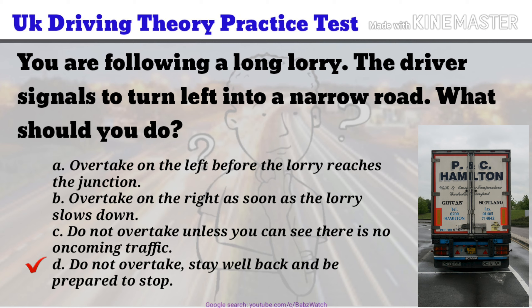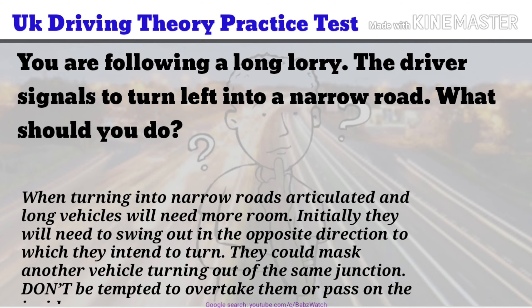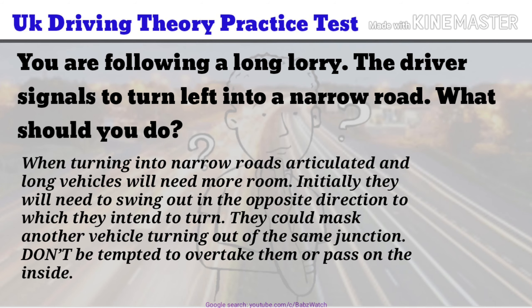Do not overtake. Stay well back and be prepared to stop. When turning into narrow roads, articulated and long vehicles will need more room. Initially they will need to swing out in the opposite direction to which they intend to turn. They could mask another vehicle turning out of the same junction. Don't be tempted to overtake them or pass on the inside.